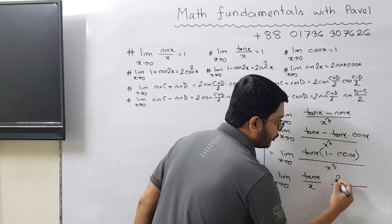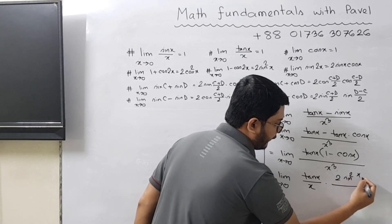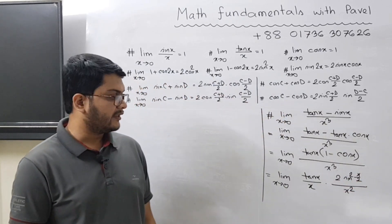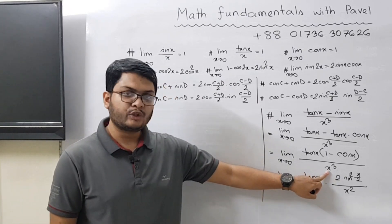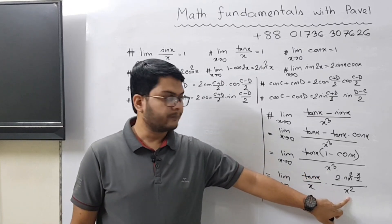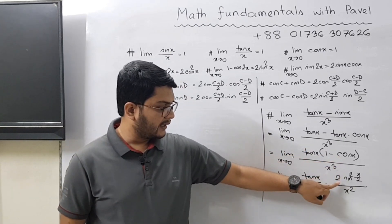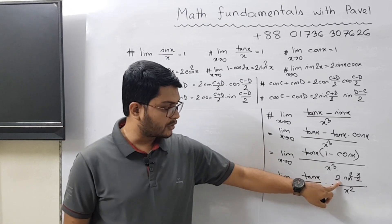What formula would that be? It would be 2 sin² (x/2), divided by x². So what we have done here is that we split x³, so we give x here and x² here. In the numerator, you keep tan x here, and this part is being converted to 2 sin² (x/2).